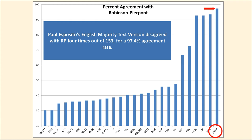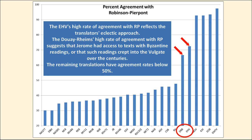Paul Esposito's English Majority Text Version has the highest rate of agreement with Robinson-Pierpont, disagreeing only four times out of 153 for a 97.4% agreement rate. The Evangelical Heritage Version's high rate of agreement with Robinson-Pierpont reflects the translators' eclectic approach and willingness to diverge from modern critical editions. The Douay-Rheims Bible's high agreement with Robinson-Pierpont suggests Jerome had access to texts with Byzantine readings in the fourth century, or that such readings crept into the Vulgate over the centuries. The remaining translations — everything to the left — have agreement rates below 50%.